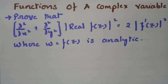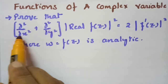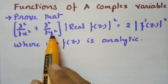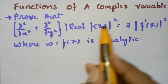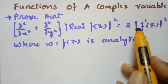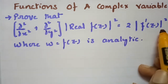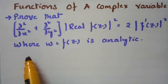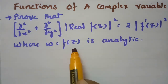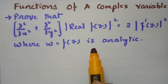In today's video I am going to explain the most important problem from functions of a complex variable. I am going to prove that (∂²/∂x² + ∂²/∂y²) of the real part of f(z) whole square is equal to 2 times modulus of f'(z) whole square, where w = f(z) is analytic.